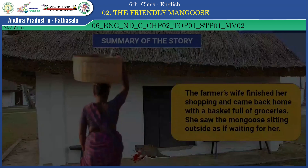Did you enjoy the story? Go to the supplementary reader unit 2, The Friendly Mongoose of class 6, and read the text carefully. You may answer all the questions in the examination. Bye, children.